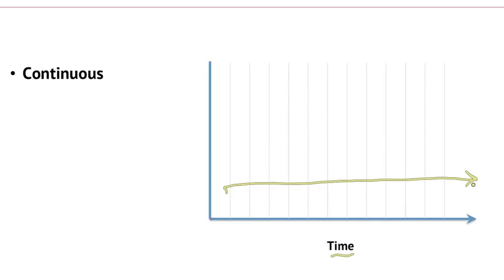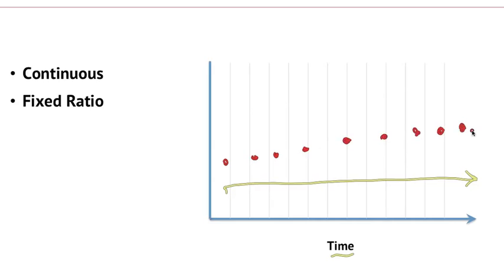The second kind of reward is a fixed ratio reward. Fixed ratio says: if the activity happens a certain number of times — whether that's visiting your website, pushing a lever in behavioral studies, or something in a game — every n number of times you get the reward. So if the fixed ratio is every other time, you get a reward the first time, third time, fifth time, seventh time, ninth time, and so forth. That's a fixed ratio reward.